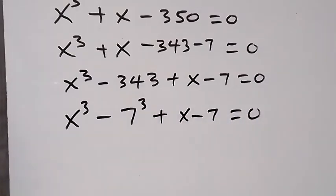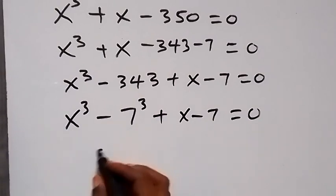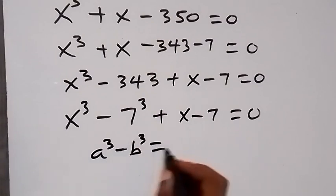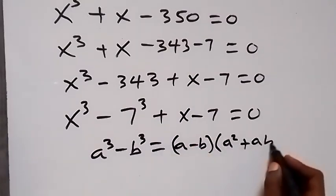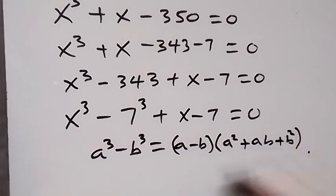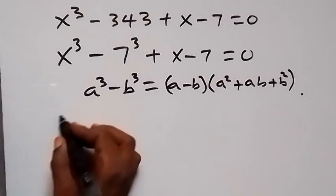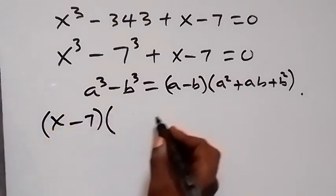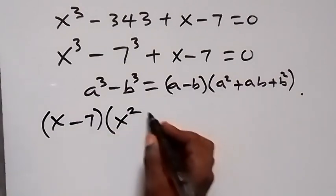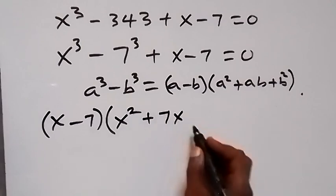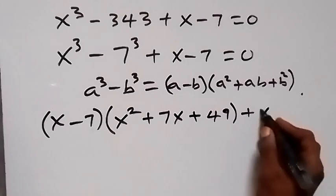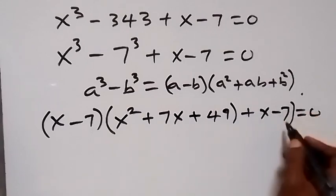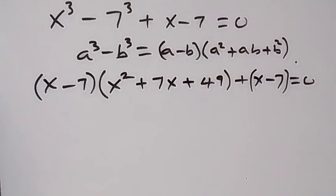So we have x³ minus 7³ plus x minus 7 equals to 0. From these two terms, using the identity a³ minus b³ equals (a minus b)(a² plus ab plus b²), we rewrite x³ minus 7³ as (x minus 7)(x² plus 7x plus 49), then close the bracket, then plus x minus 7 equals to 0.